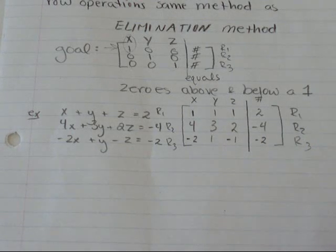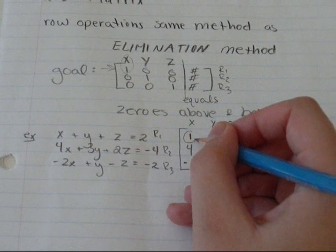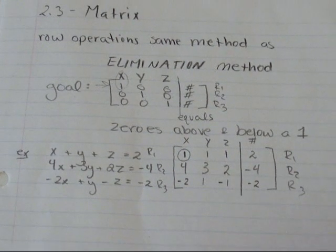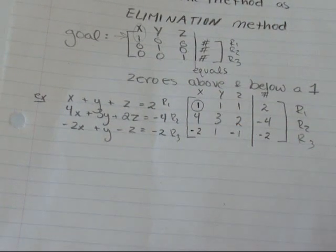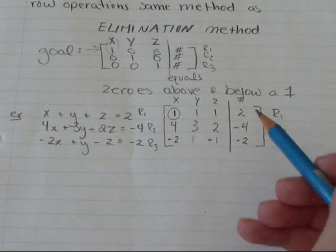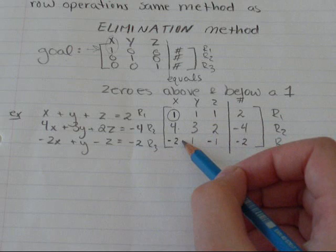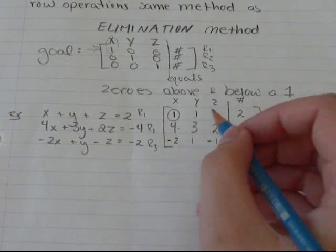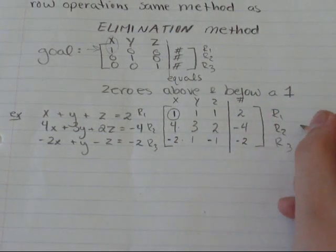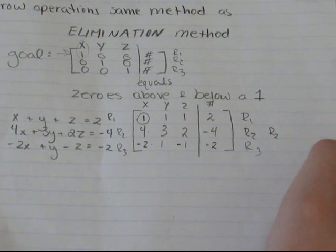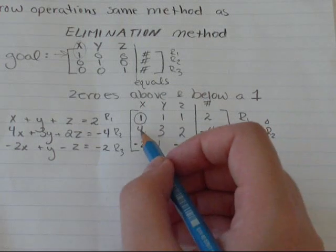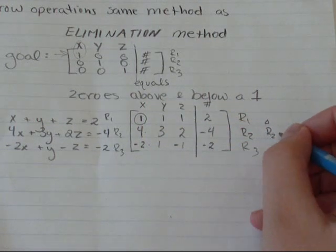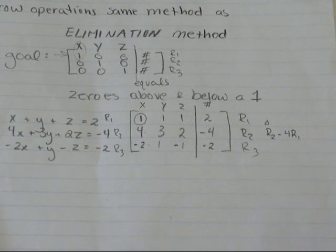A good place to start is this first entry. The goal is to get a one with zeros below, and I already have a one, so that's good. So how am I going to get this entry to be a zero and this one to be a zero? I'll make the row two entry a zero first. So: R2 becomes R2 minus 4 times row 1.